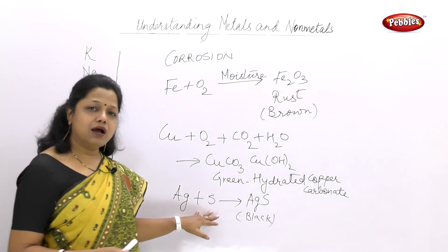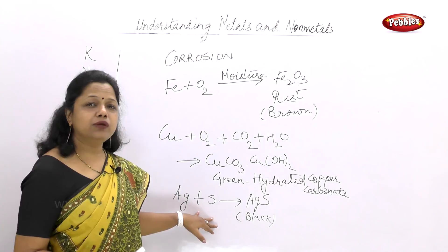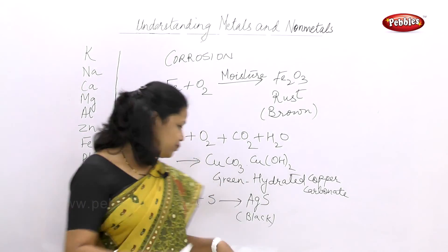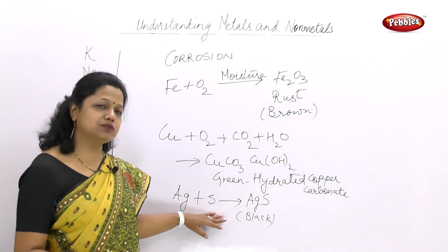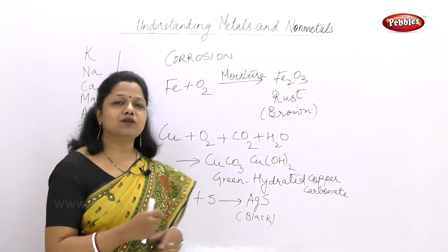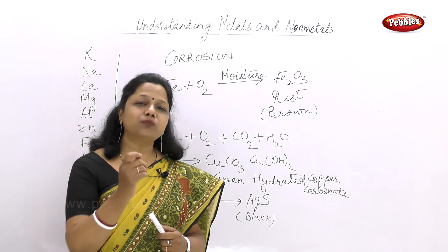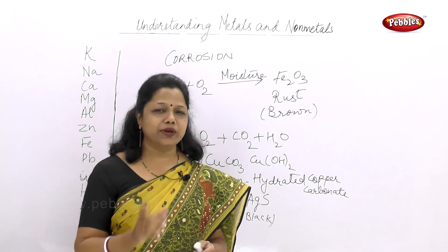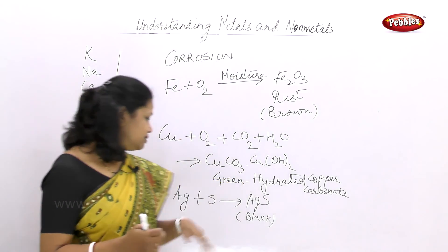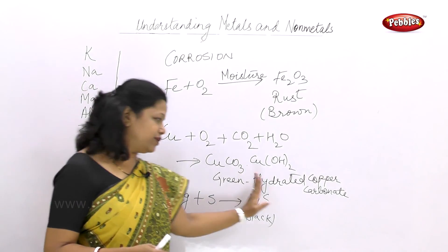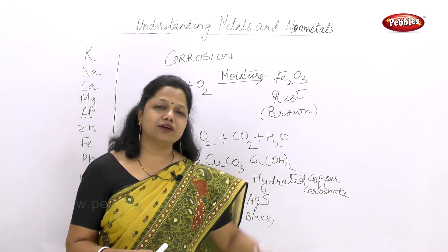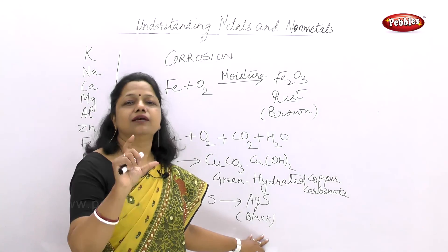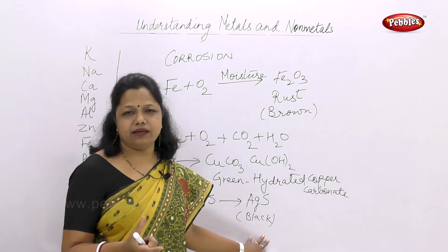Silver corrosion can be removed at home using toothpaste. Toothpaste contains a base, and this base helps in removing the sulphur from the black coating that is formed on silver. Thus silver is again shining.